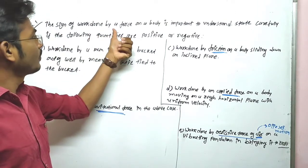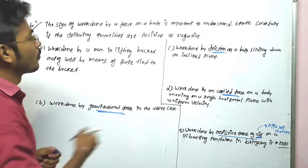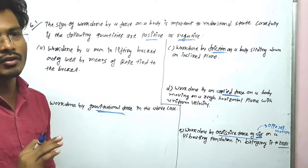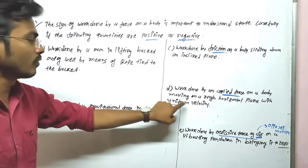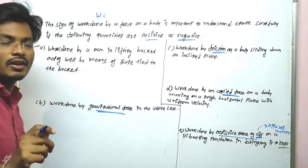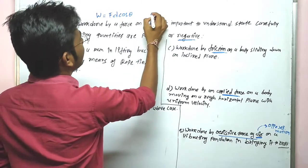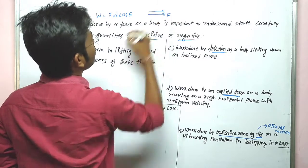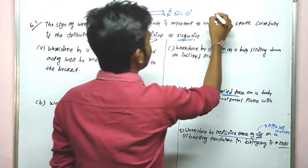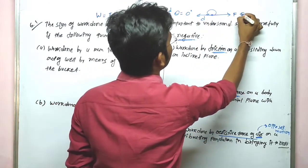6.1: The sign of work done by a force on a body is important to understand. We need to state carefully whether the following quantities are positive or negative. As we know, work done W is equal to F·d·cosθ. When force and displacement are in the same direction, θ = 0°. When displacement and force are opposite, θ = 180°.